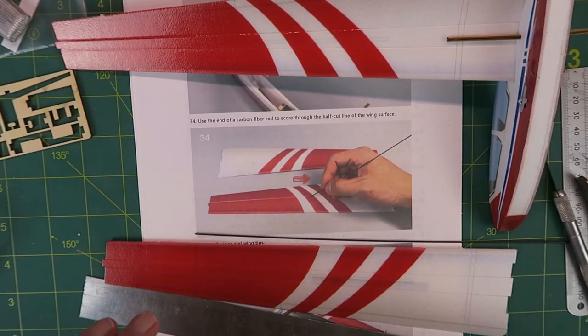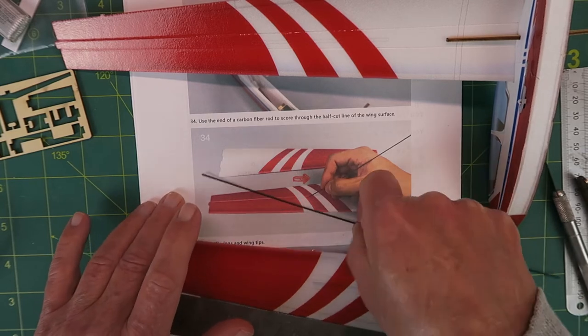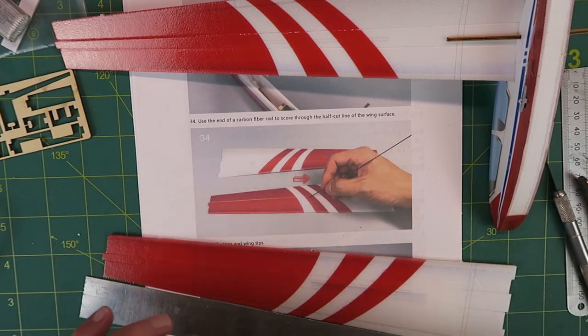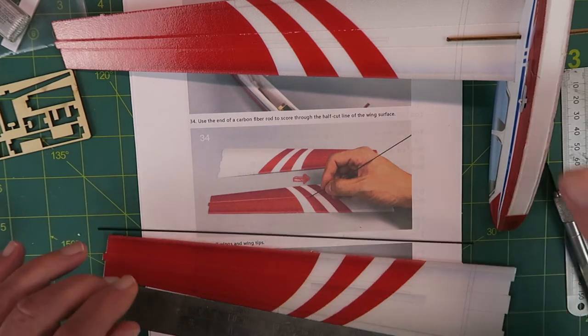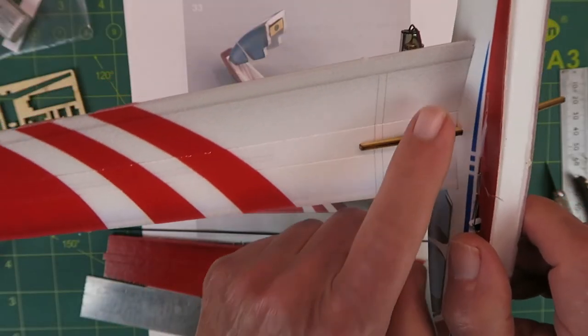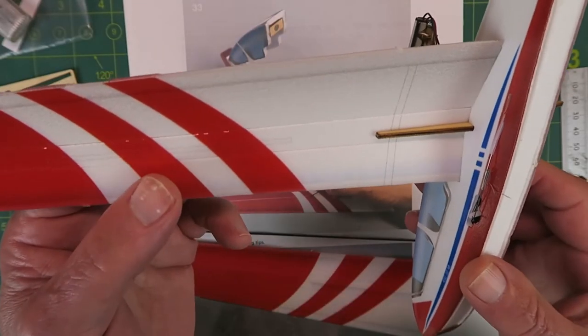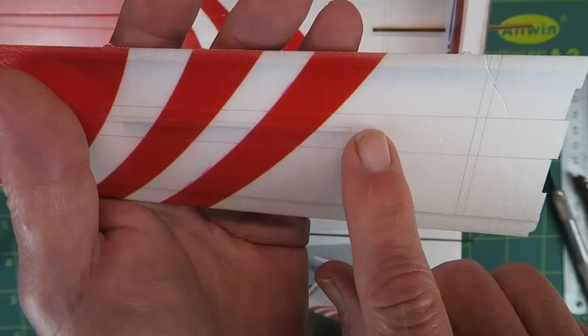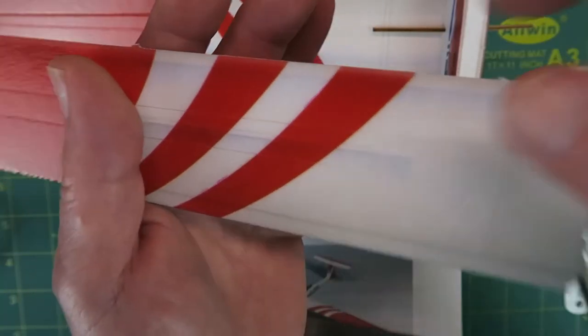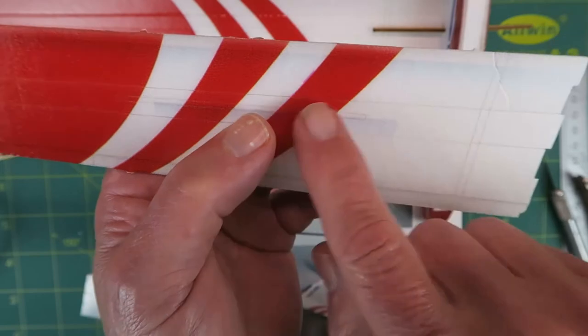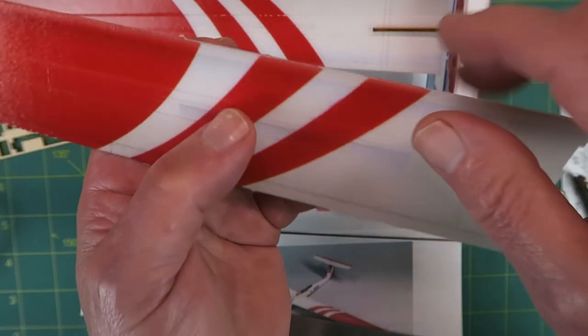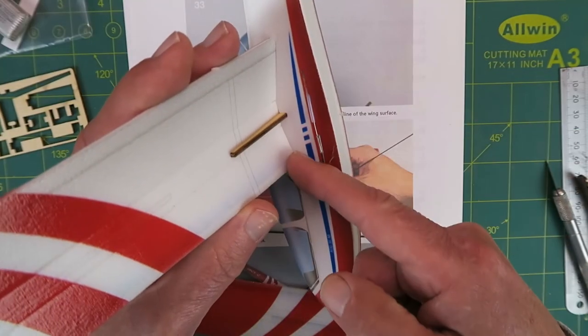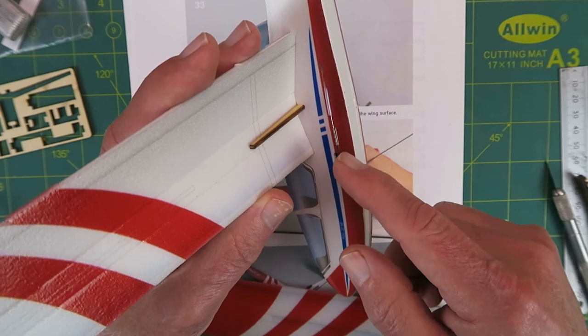On to the wing assembly then. As it says here, using the end of the provided carbon strengthening rods, score through the half cut line. That may not be immediately obvious to people. This wing I've already done and just placed to check it for fit—I haven't glued it in place yet. You can see here where I've gone along these lines. These are a little difficult to see but they are in fact cut lines into the foam. Really all you're doing is to open those out a little bit to enable the wing to achieve the correct curve. As you can see, once those score marks have been made—and I wouldn't go too deep on them—it will bend to the shape of the aerofoil there.